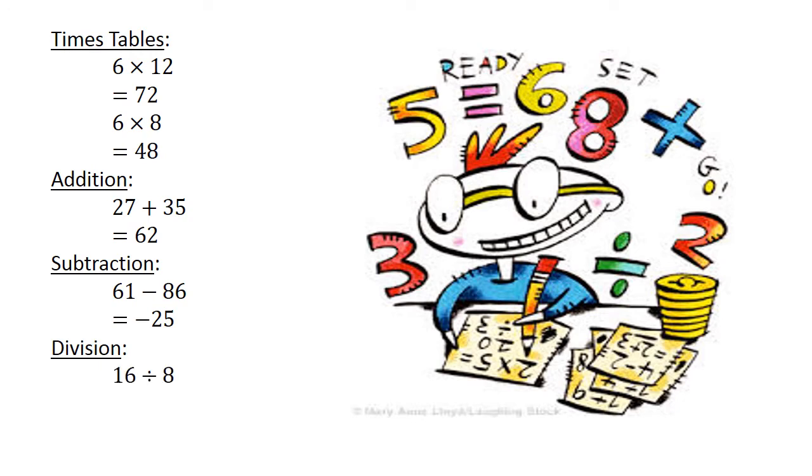Division. 16 divided by 8 equals 2. Square numbers. The square of 3 equals 9. Square root of 9 equals 3.